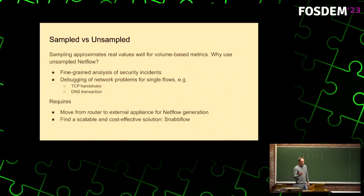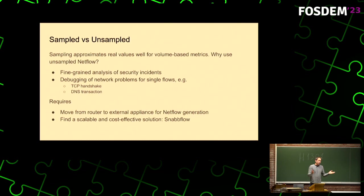So vendors started to basically only implement sampled NetFlow. These days if you buy a Cisco or a Juniper box and you do NetFlow, you get sampling. Sampling is fine if you're only interested in aggregate data — big aggregated network flows between networks, for instance. You make certain assumptions about the traffic, upscale it, and you get fairly reasonable numbers.